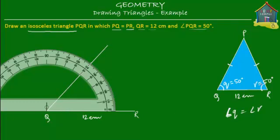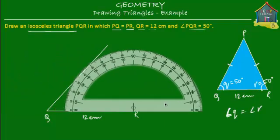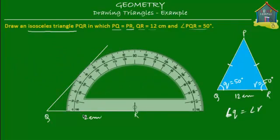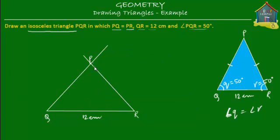Angle R is also equal to 50 degrees, so we take the protractor, move it to point R, and mark another line so that angle R is equal to 50 degrees. Join the two lines through, and the point at which they cross is point P. This is your triangle PQR — the isosceles triangle.